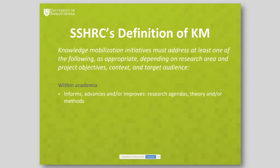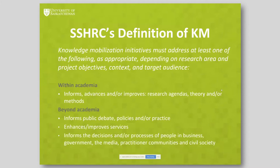As examples of what knowledge mobilization looks like within and beyond academia: within academia it may be informing the research process, informing methodologies, informing future research projects, or how others undertake their research. Beyond academia, your research may help to inform policy or practice discussions, may directly impact what kinds of services are available or how those services are offered, potentially identifying new services that might be useful or necessary, and essentially informs the way people make decisions about whichever aspect of their lives your research affects.